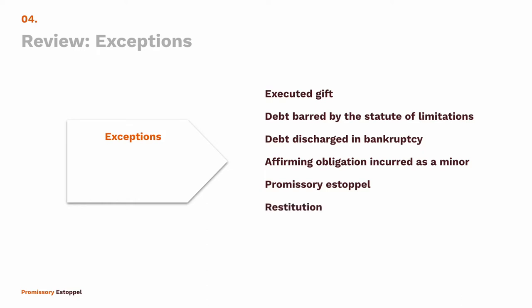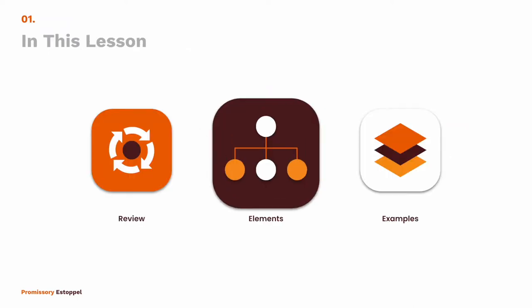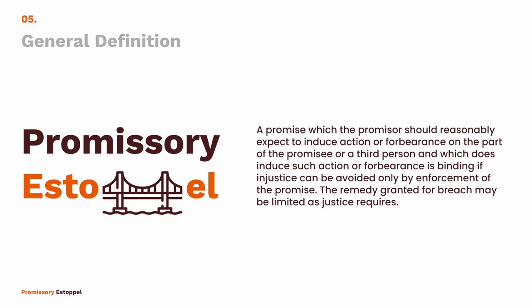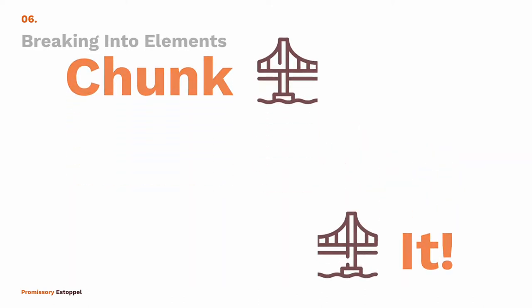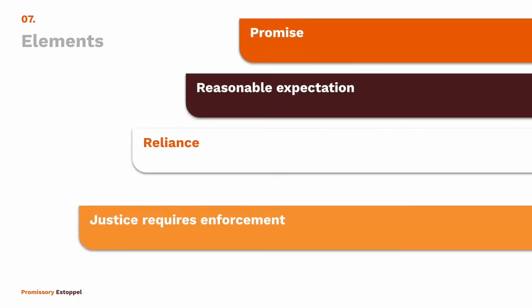Another exception is promissory estoppel — that's what we're looking at today. Then restitution and promissory restitution, which we'll look at in the next lesson. The general definition comes from Restatement Section 90: 'A promise which the promisor should reasonably expect to induce action or forbearance on the part of the promisee or a third person, and which does induce such action or forbearance, is binding if injustice can be avoided only by enforcement of the promise.' We can divide that into five elements.